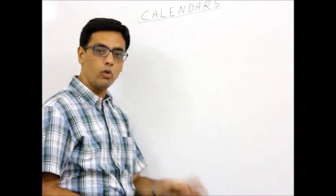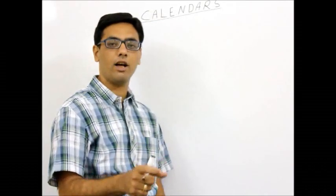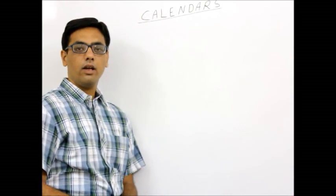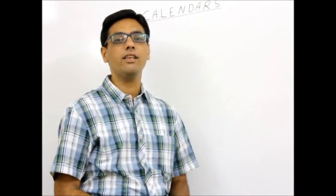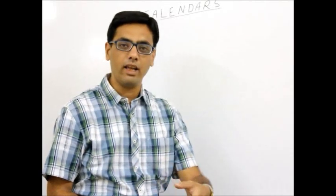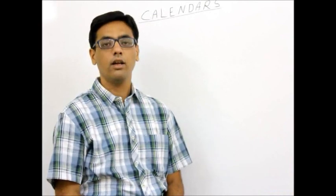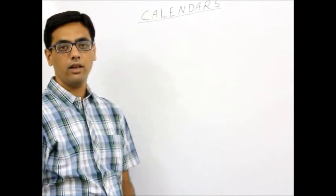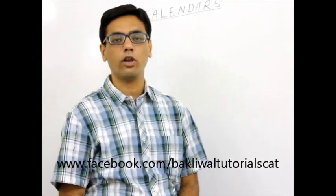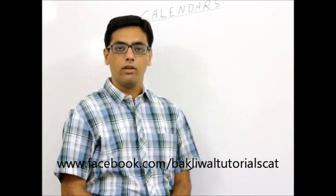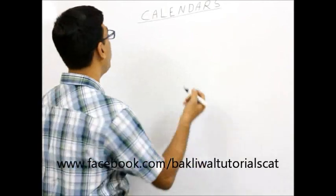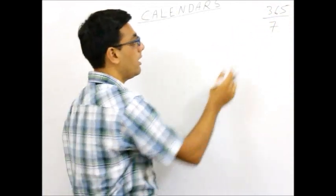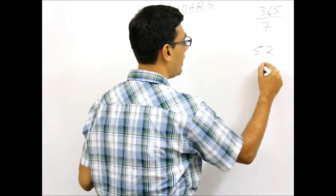So if we know for sure that after exact 7 days the same day repeats again, we can actually predict the entire year, 10 years, 100 years or whatever. That's what I am going to teach you today. I would like to know if 1st of January is Sunday, what will be the day on 1st of January the next year. So first of all, how many days are there in the year? Assume there are 365 days — talking about the normal year to begin with. If there are 365 days, dividing by 7: 365 upon 7 gives exactly 52 as the quotient and remainder is 1.